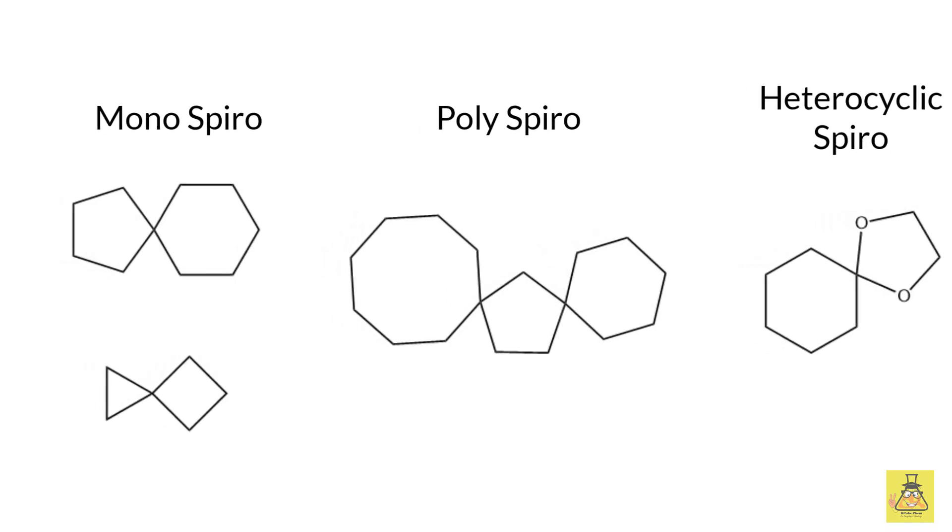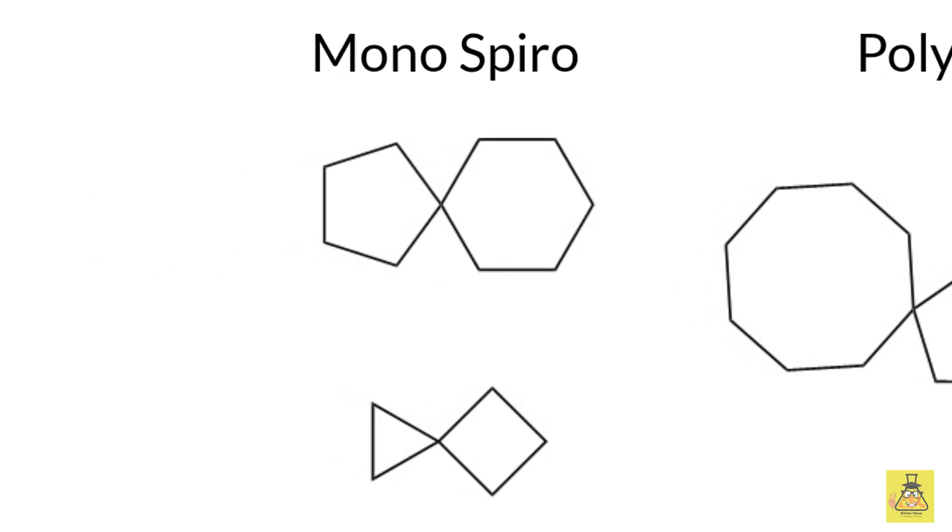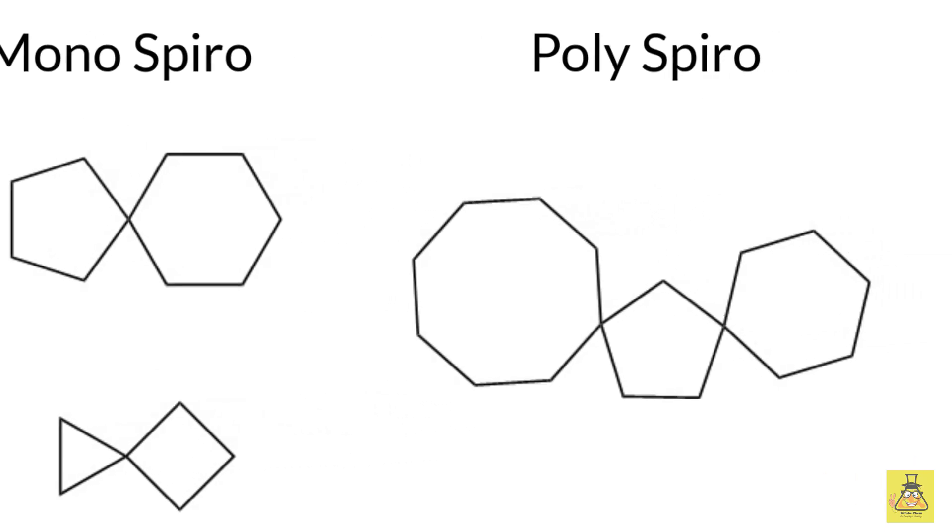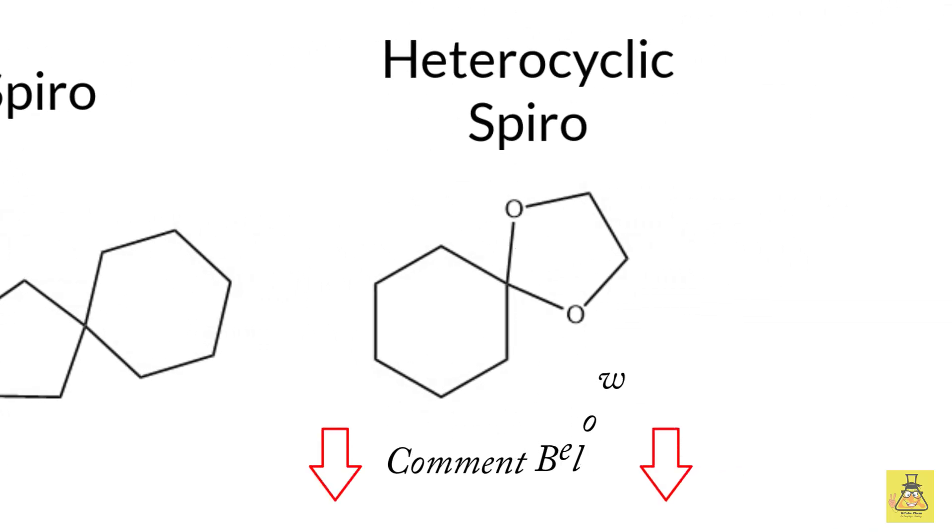For this video we will stick to the IUPAC nomenclature of mono spiro compounds. In case you want to learn nomenclature of poly spiro or heterocyclic spiro compounds, do let me know in the comment section below so that I can make a video on that.